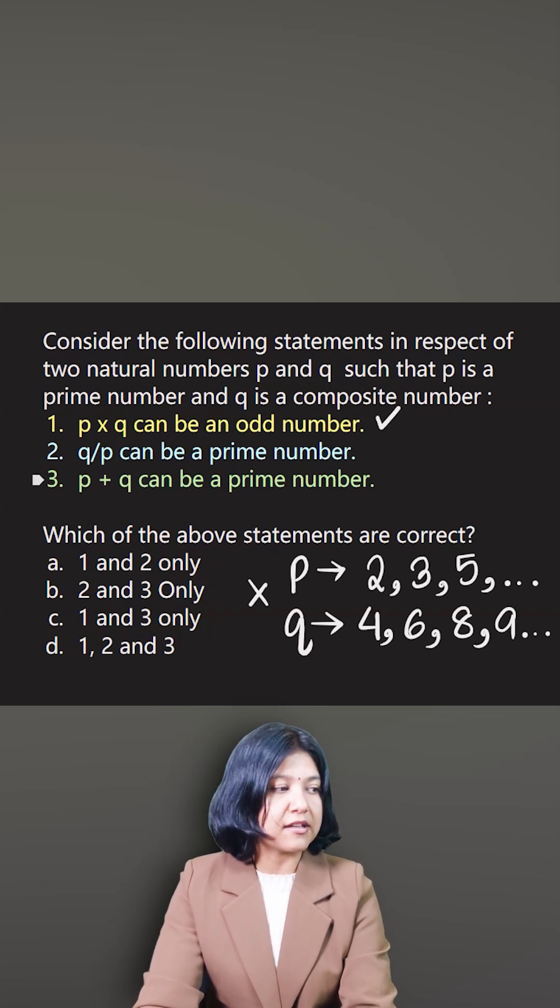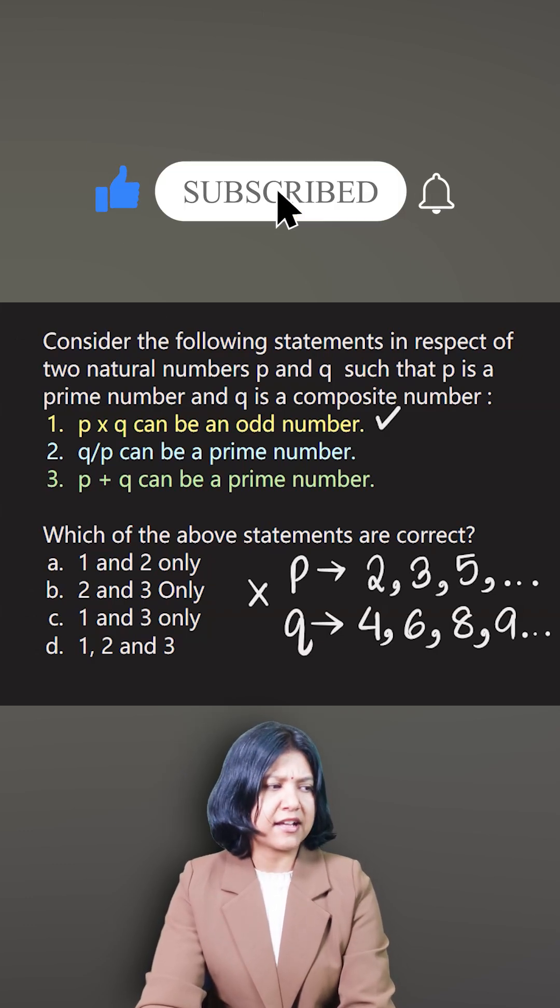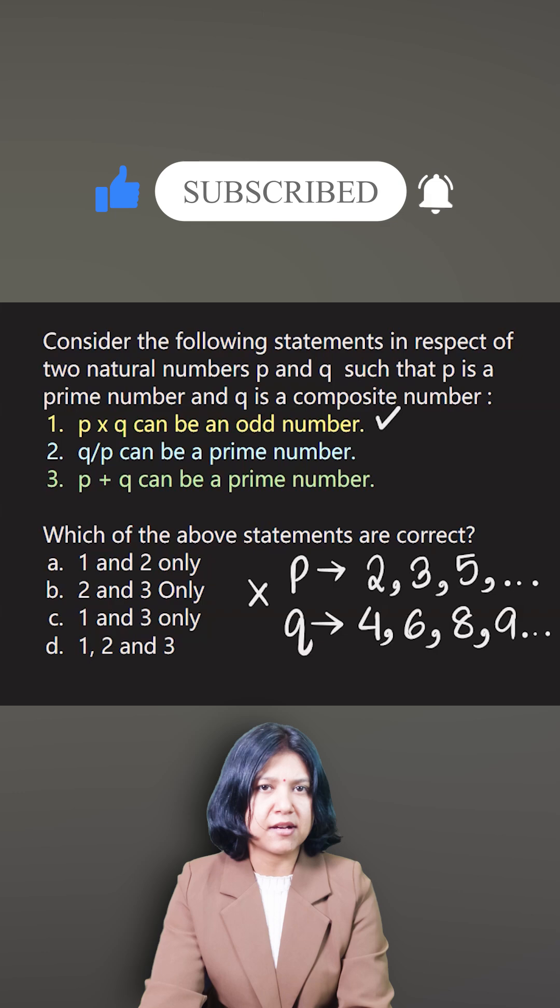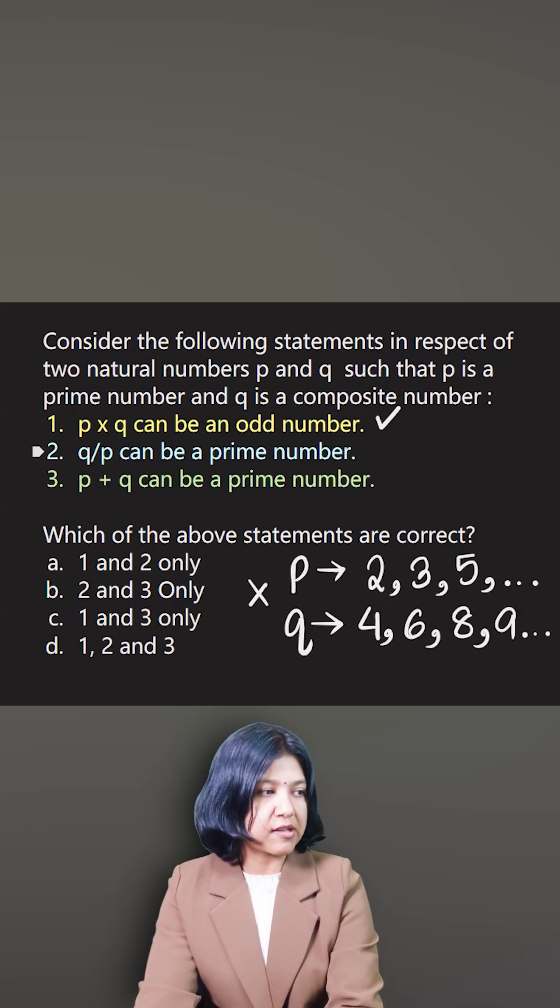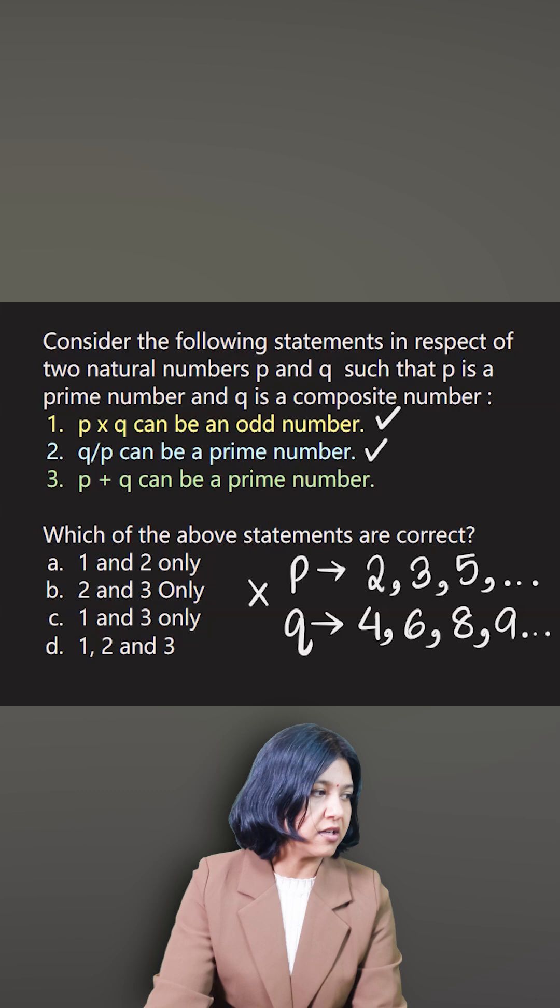Q upon P - if you divide a composite number by a prime number, you can try with any pair like 6 divided by 3, and you get a prime number. Therefore, it is possible again that when you divide a composite by a prime number, the answer is a prime number.